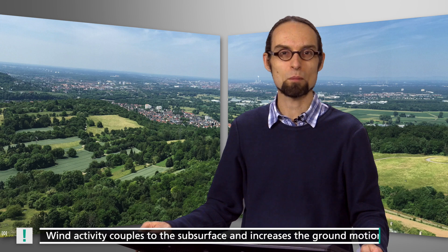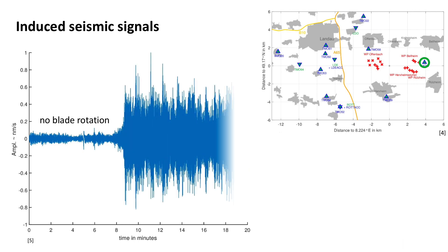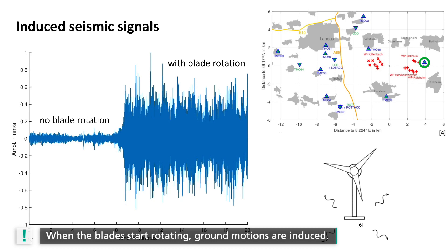Apparently, wind activity couples to the subsurface and increases the ground motion. This may be due to trees and other vegetation that bend in the wind, or the movements of wind turbines. First, I show you the effect of the rotating blades. The geophysicists again measured seismic signals on a windy day. But now, they had the opportunity to do this while the wind turbine had a break and the blades were not rotating. Then the turbines were activated and the blades began to move. You can see the effect on the ground motion very clearly. Hence, when the blades start rotating, ground motions are induced.